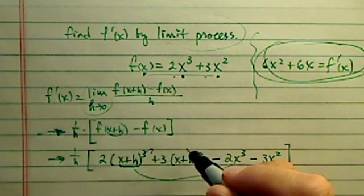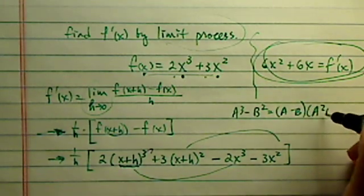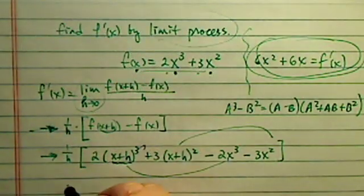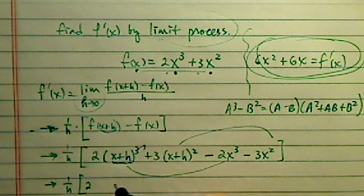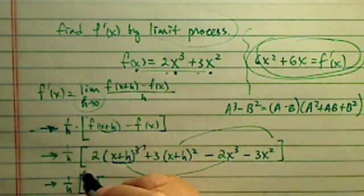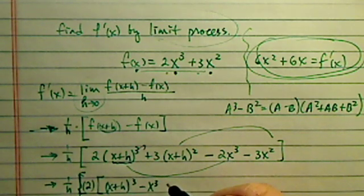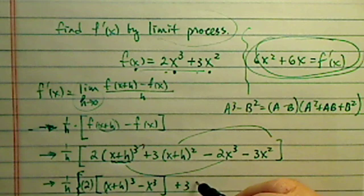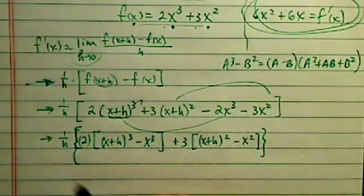I'm going to combine the cube terms because I have a formula. a cubed minus b cubed is equal to a minus b times a squared plus ab plus b squared. It's a long, tedious one, but it's not hard, so let's keep track of this one.